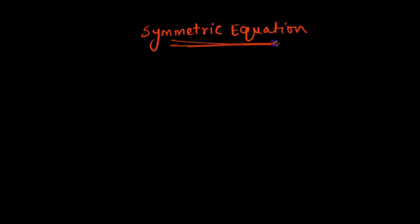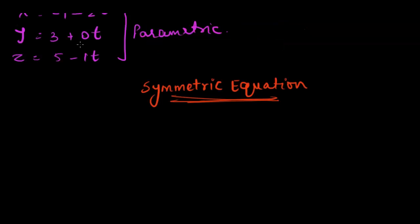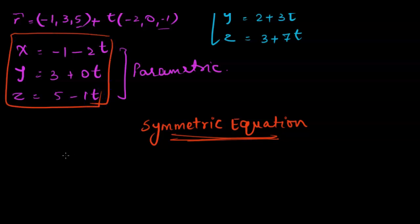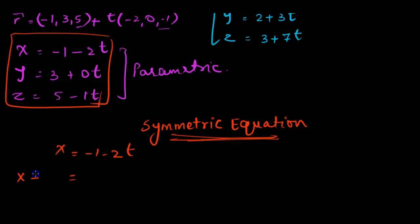Now let's talk about what symmetric equations are. A symmetric equation is an equation that we can get from any parametric or vector equation. Let's pick the second example with parametric equation x equal to negative 1 minus 2t. We'll use the parametric equation to isolate for t, so we get x plus 1 divided by negative 2 equals t.